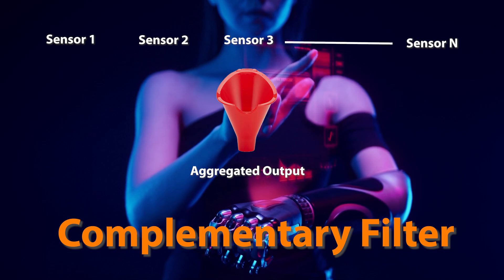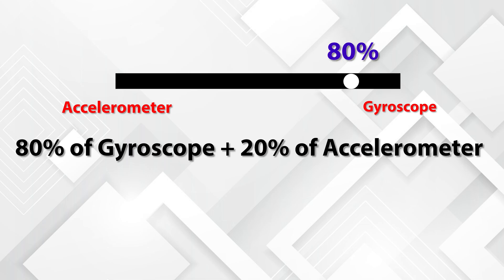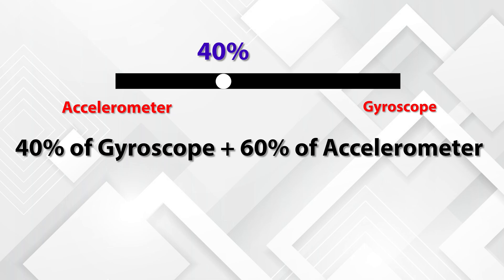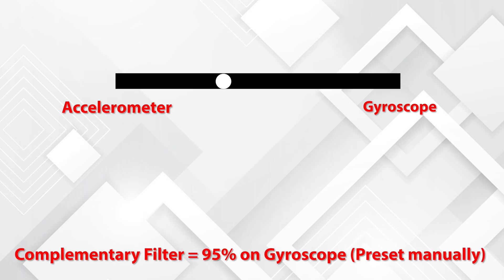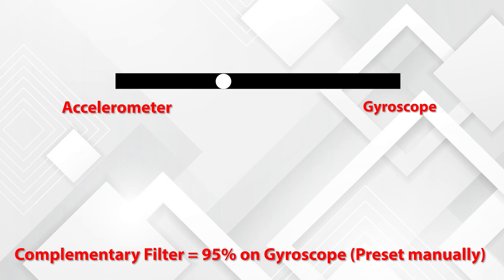Now let's try to fuse these two sensor outputs using a complementary filter. Complementary in this sense means we combine two measurements in such a way that they complete each other — we take some part of one measurement and add it to the complementary part of the other, so that the sum of the two parts is still one whole measurement. The best way to achieve this is to pass the accelerometer output through a low-pass filter and the gyroscope through a high-pass filter, adding them together so they complement each other.